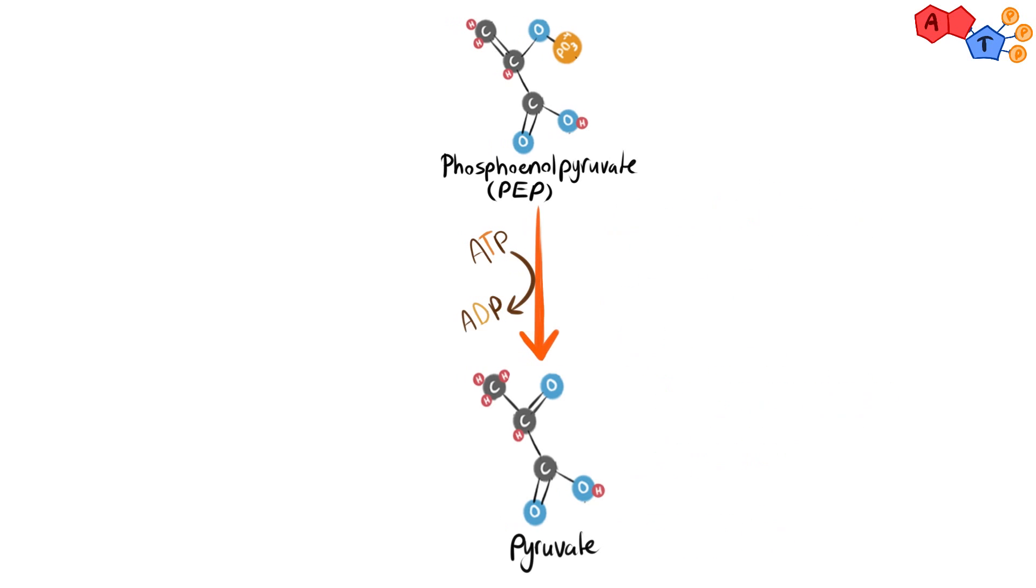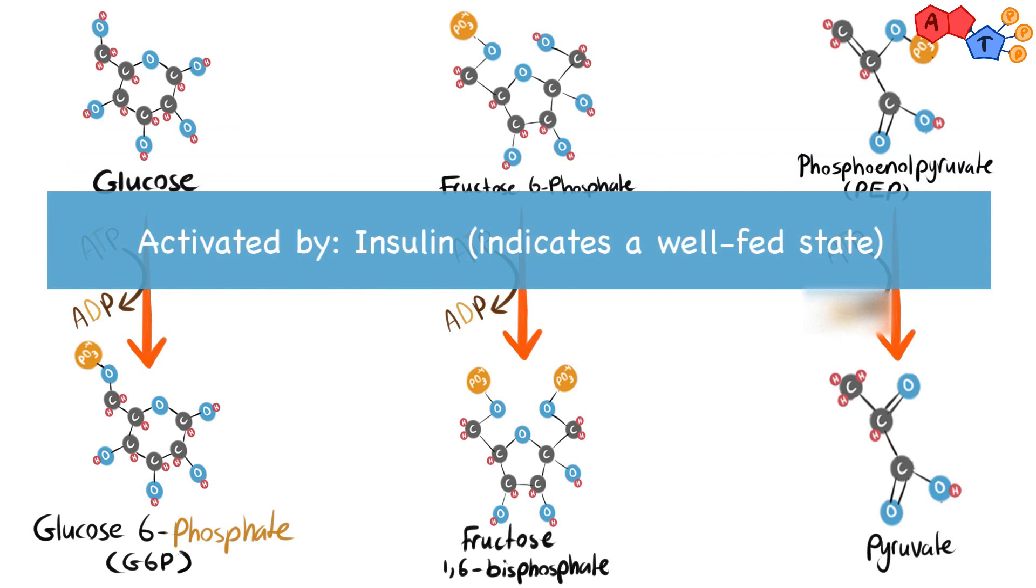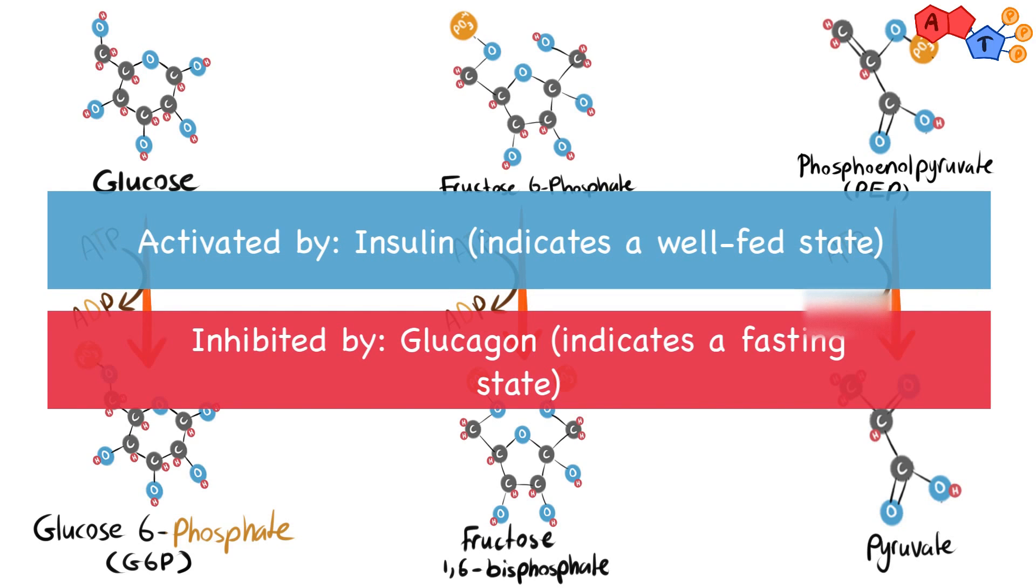Now that we know the three control points of glycolysis, let's take a look at their hormonal regulation. All three steps are activated by insulin, a hormone that indicates a well-fed state, and inhibited by glucagon, a hormone that indicates a fasting state.